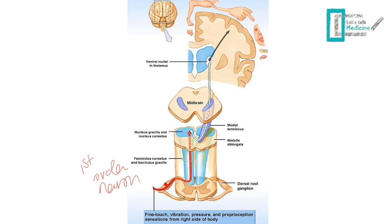The second order neuron crosses to the opposite side at the level of the medulla oblongata as the internal arcuate fibers — you can see them crossing the midline. After crossing, these fibers ascend through the pons and midbrain as the medial lemniscus, which is why this pathway is called the dorsal column medial lemniscal pathway.